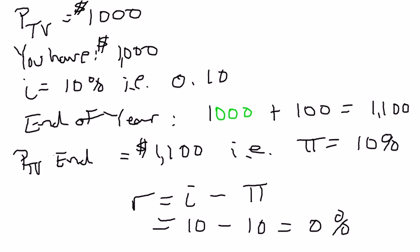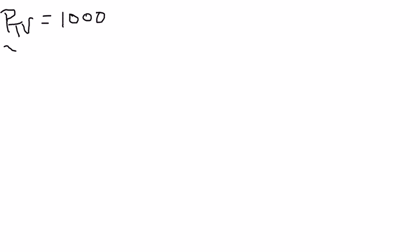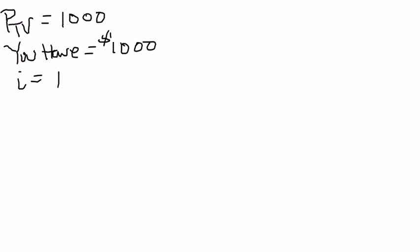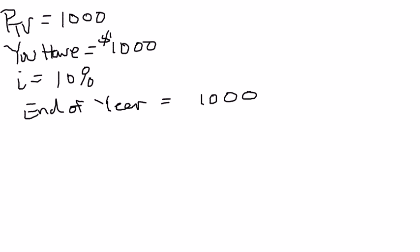Let me do a slightly modified example to show a positive real interest rate. Again, we start with the price of the TV at one thousand dollars. You have one thousand dollars to start — enough to buy a TV at the beginning of the year. The nominal interest rate is ten percent, so at the end of the year you have your one thousand dollars plus one hundred dollars in interest, giving you a total of eleven hundred dollars.